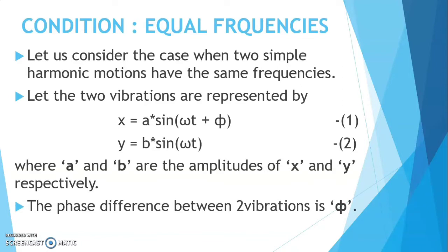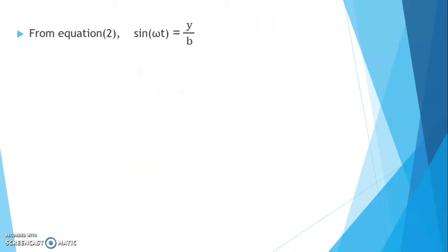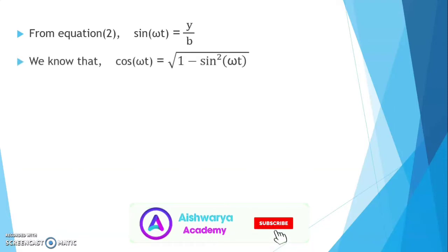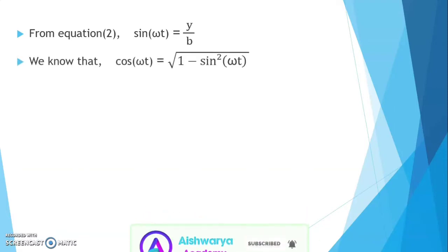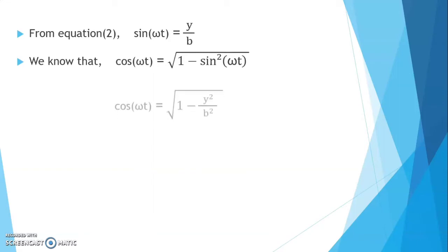The equation of resultant vibration can be obtained by eliminating t between equation 1 and equation 2. From equation 2, sin(ωt) equals to y/B. We know that cos(ωt) equals to √(1 − sin²(ωt)). Therefore, substituting the value of sin²(ωt), we get cos(ωt) equals to √(1 − y²/B²).